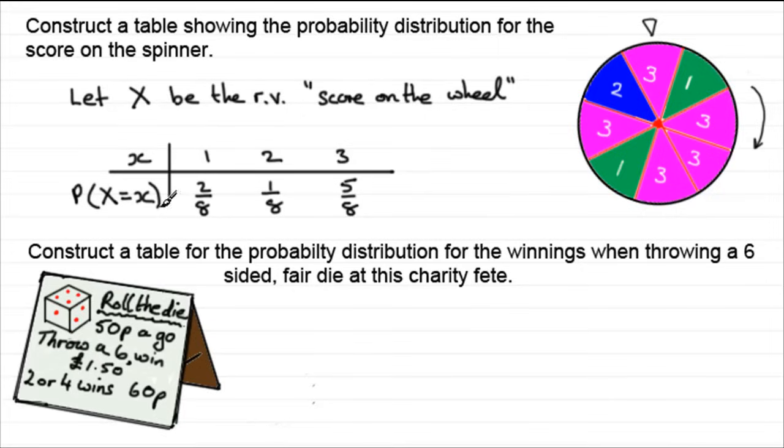So you must always remember that all these probabilities should add up to 1. And here we have our probability distribution table for the score on this spinner. Okay, let's move on to this next one. This is quite an interesting problem. I picked this one because it's a little bit more challenging. What we've got here is to construct a probability distribution table for the winnings when throwing a six-sided fair die at this charity fete. At this fete we have a competition. Basically it's called roll the die. 50p a go. If you throw a six you get £1.50. And if you throw a two or a four you get 60p. And we've got to look at the probability distribution for the winnings.